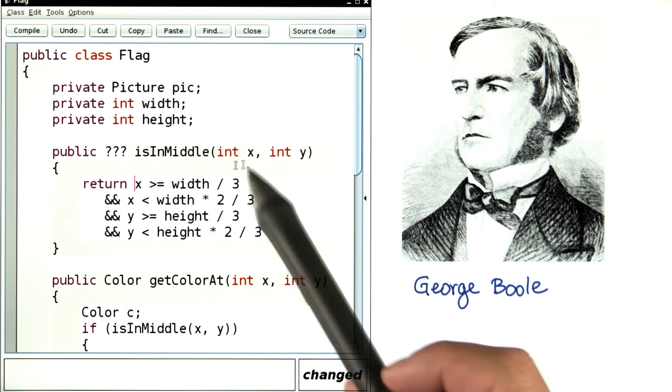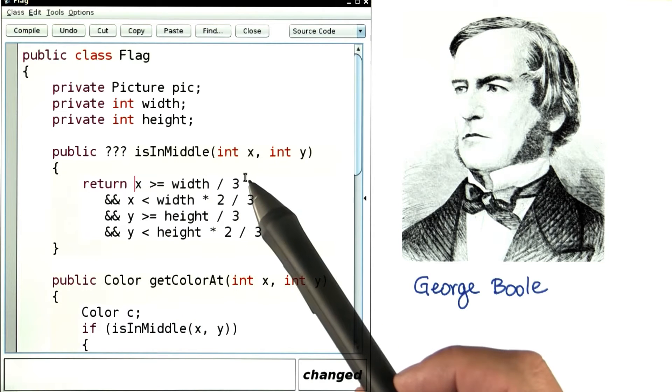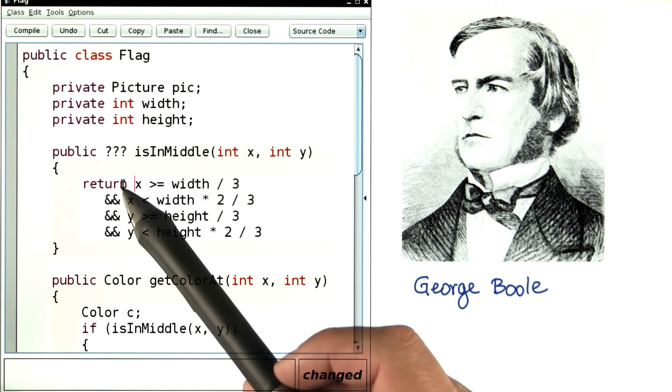Here it is. isInMiddle takes an x and a y coordinate. And here you have the exact same condition that we've had before. And we simply compute and return that.